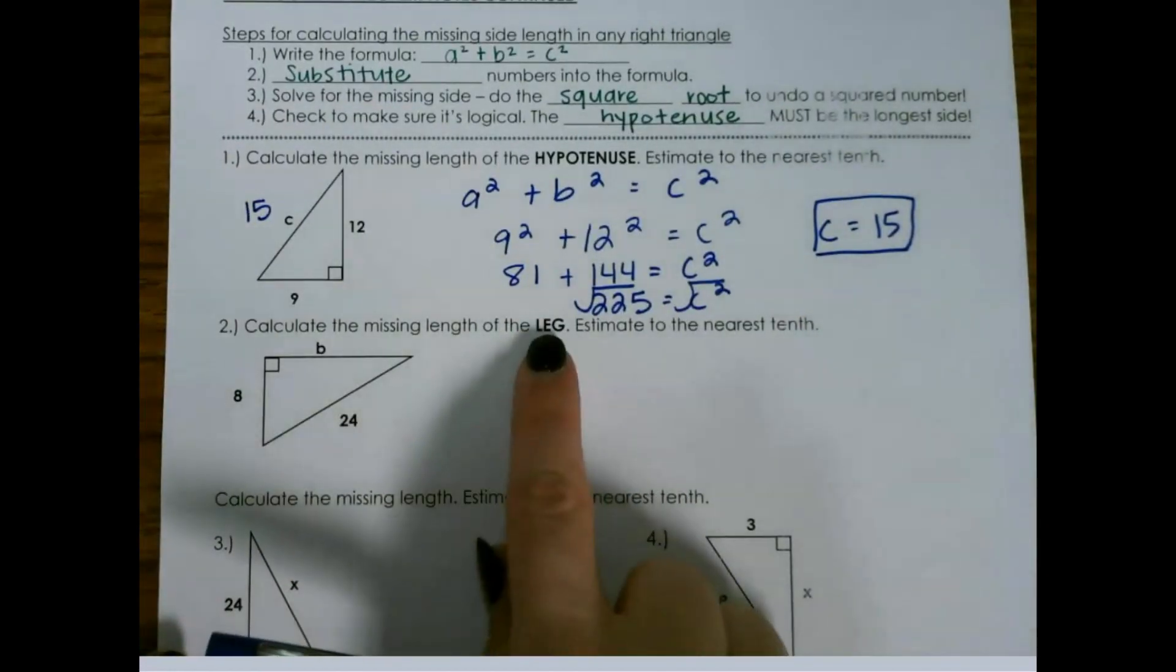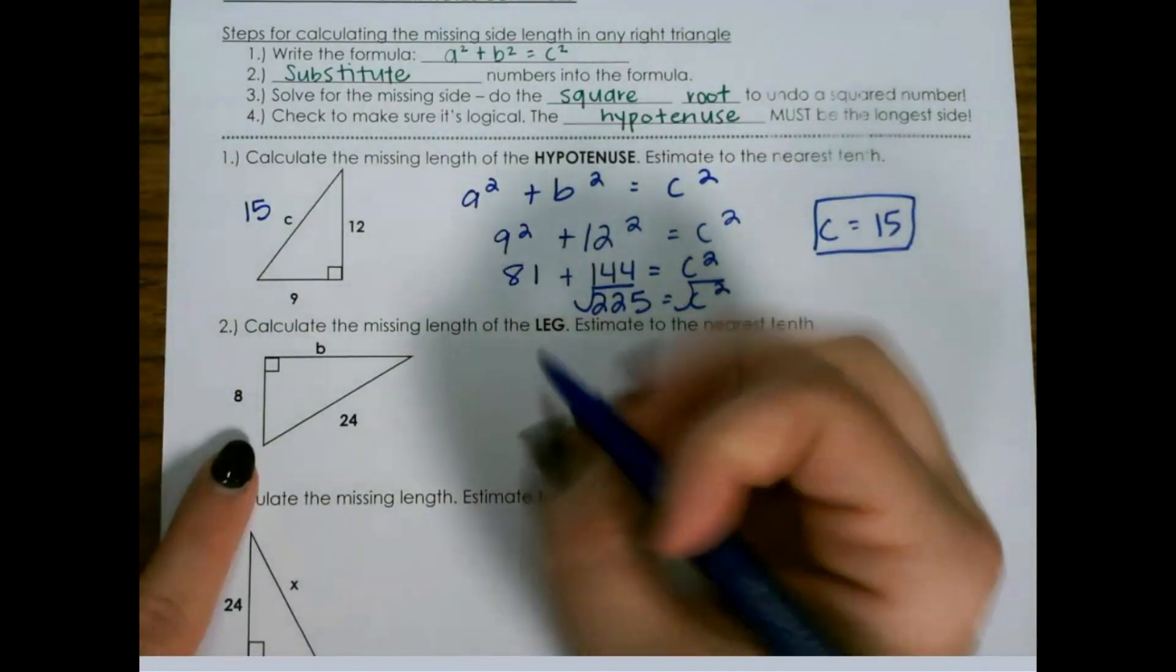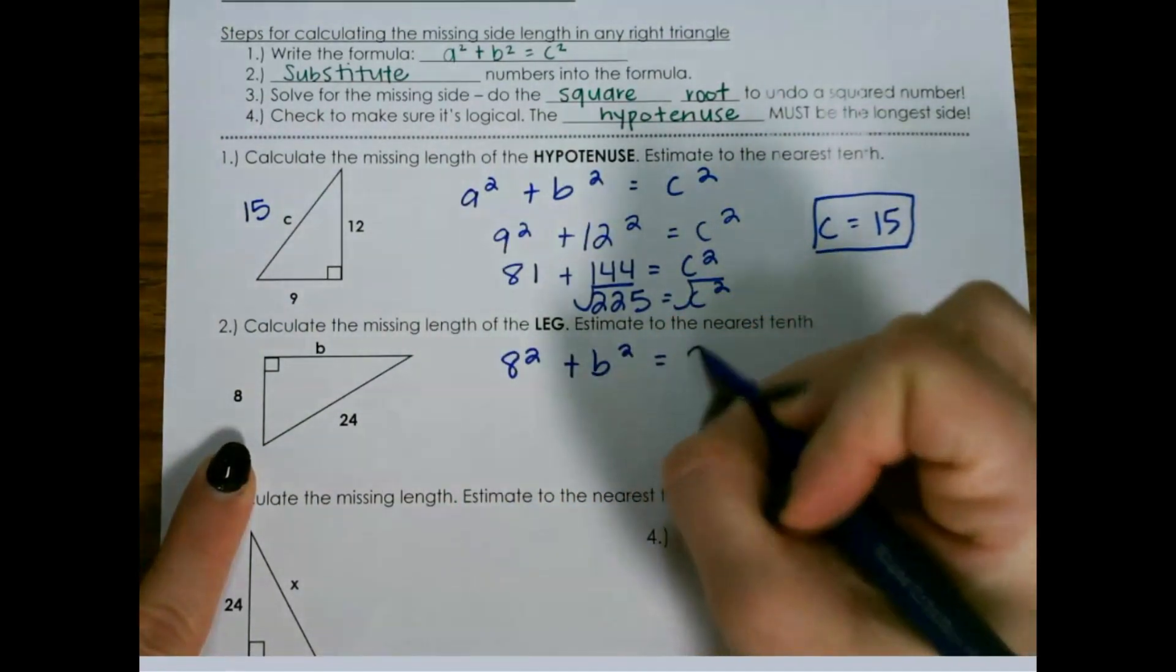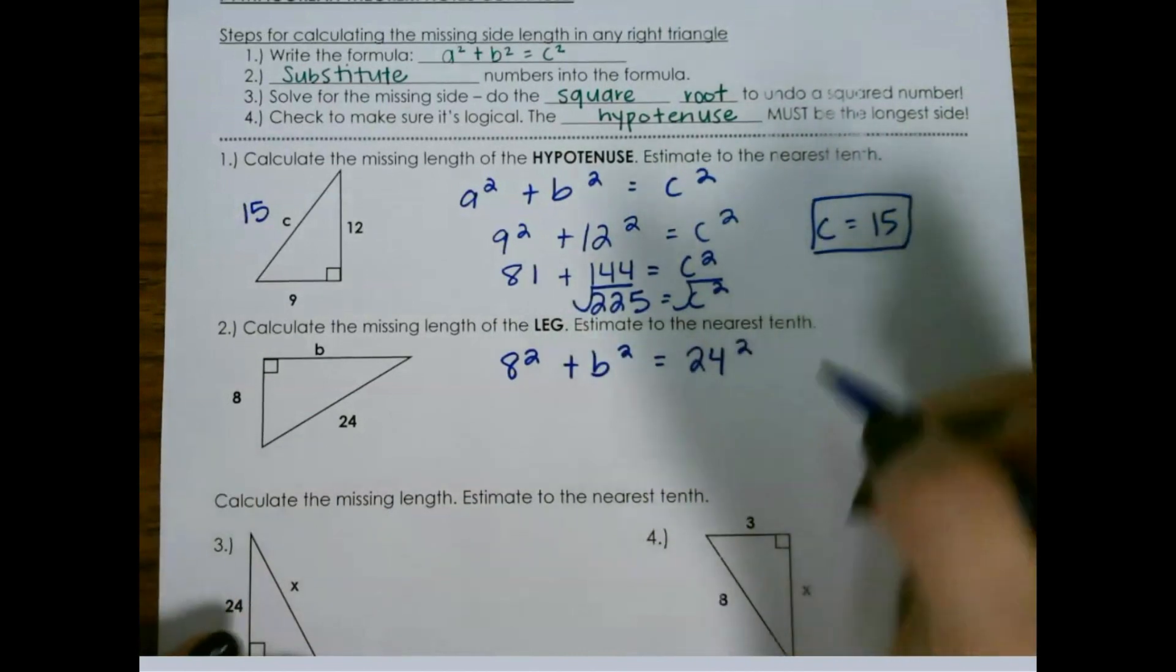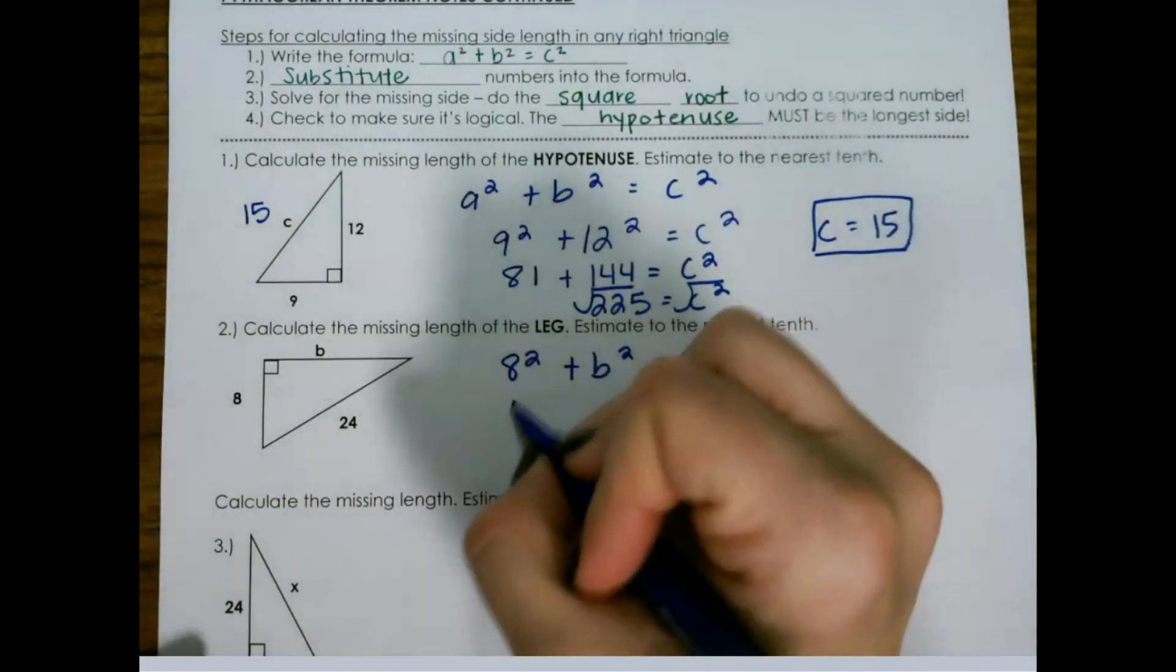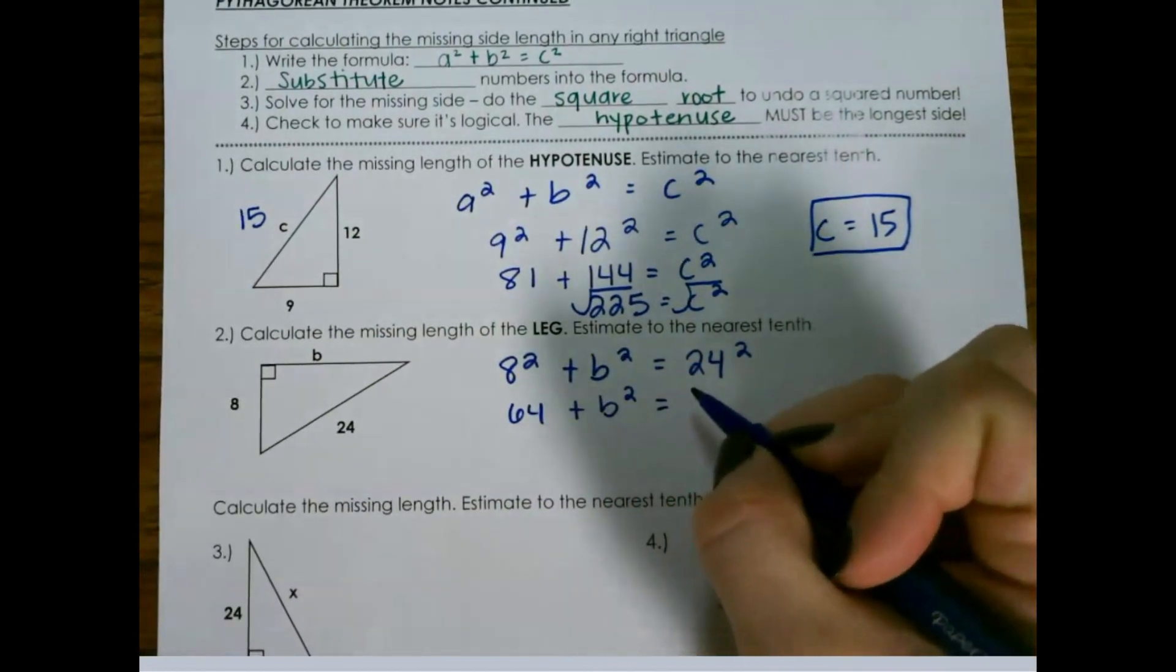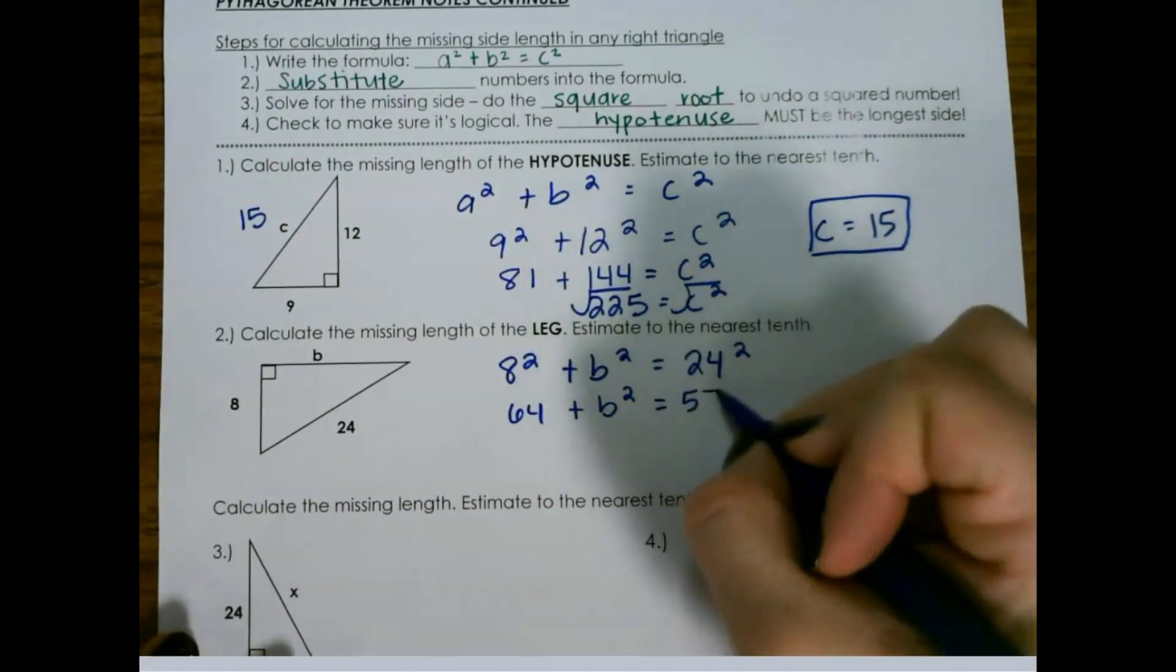Let's look at the next one where we're looking for a leg. So we have a squared, we don't have b squared, and we have c squared. So 8 squared is 64 plus b squared, and 24 squared is 576.